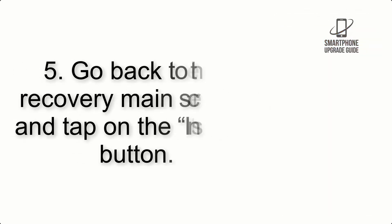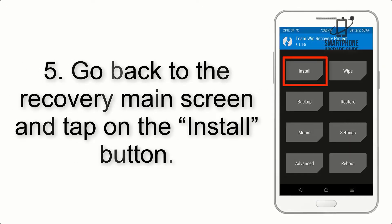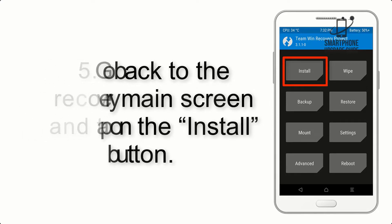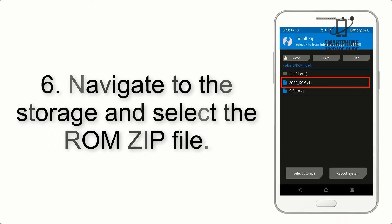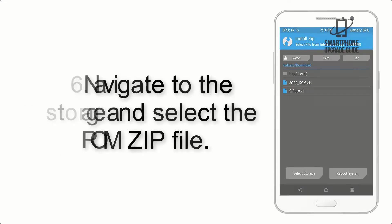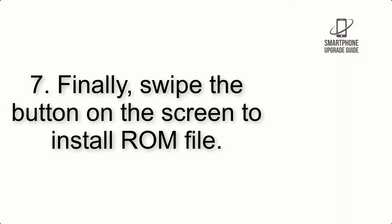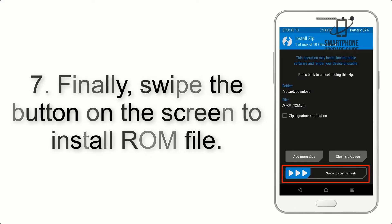Step 5: Go back to the recovery main screen and tap on the Install button. Step 6: Navigate to the storage and select the ROM zip file.